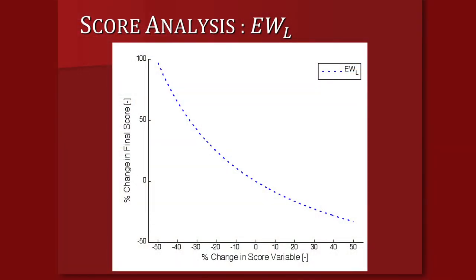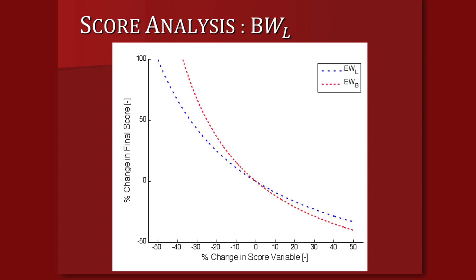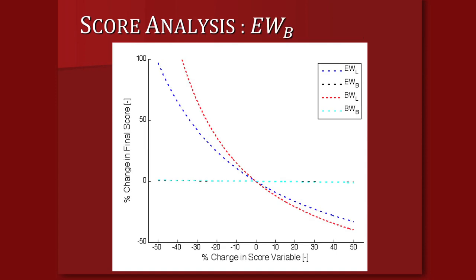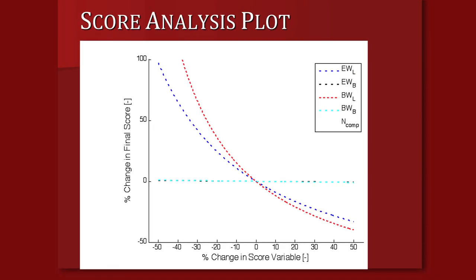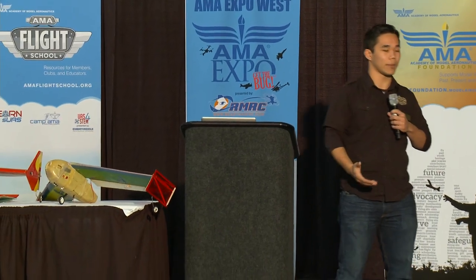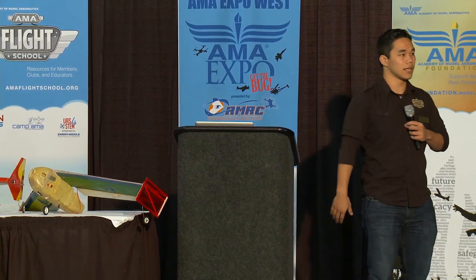For example, our empty weight analysis shows the lower our empty weight, the higher our score — same for battery weight, both for our little plane. Our larger plane's weight and battery weight don't factor as much into the scoring. For number of components, the graph is a step function because you can't have half a component. This told us we needed to focus on minimizing the empty weight and battery weight of our little plane, and build a one-component airplane. That led us to choose a flying wing, since it would be easiest to build another plane around — no empennage or tail body to worry about.